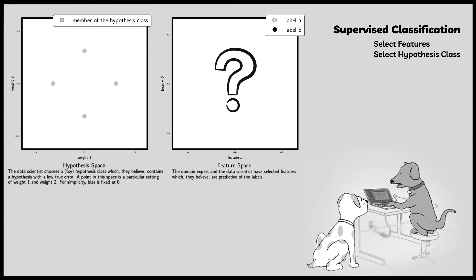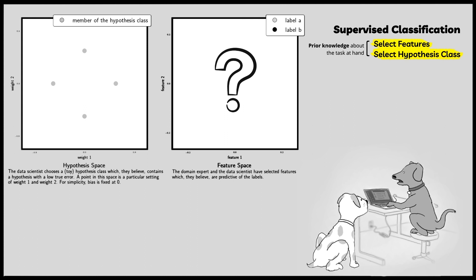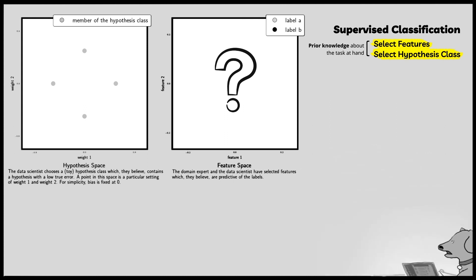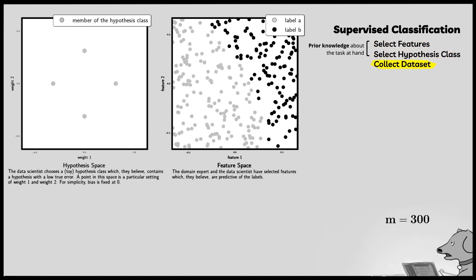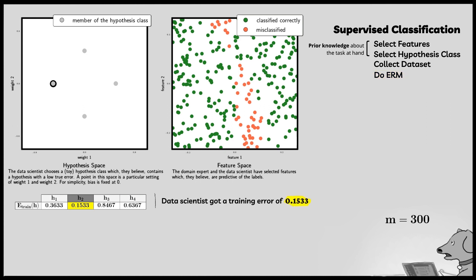The data scientist assumes that there exists some unknown distribution. They then choose a hypothesis class which they believe contains a hypothesis with a low true error. This toy hypothesis class has just four hypotheses. These choices have been made based on prior knowledge about the learning task, all before collecting the data set. The data scientist collects 300 data points drawn independently from the unknown distribution. They can now check how each hypothesis performs on the data set — that is, they calculate the training errors of each of the four hypotheses — and then select the hypothesis with the lowest training error. This is called empirical risk minimization, or ERM.